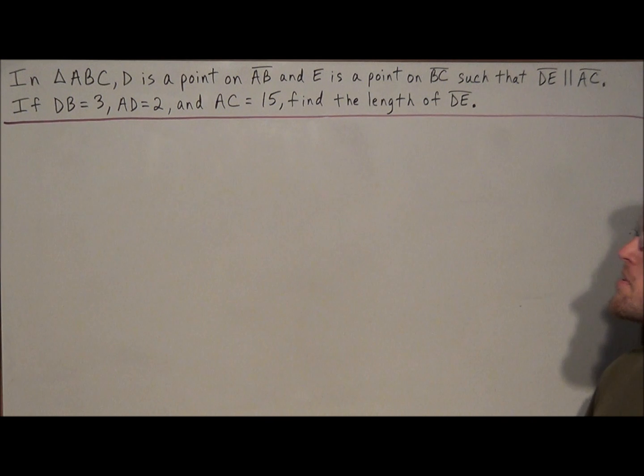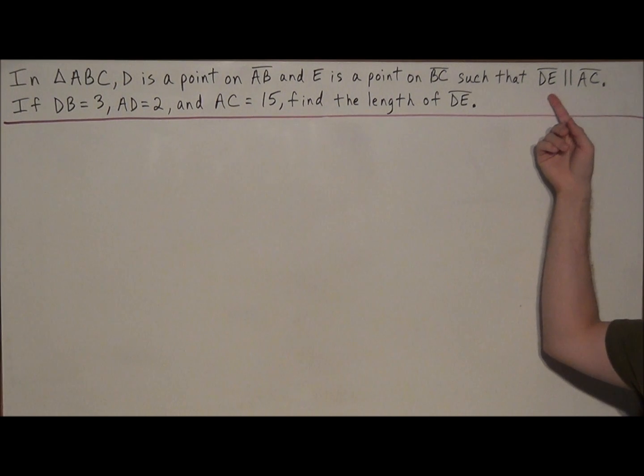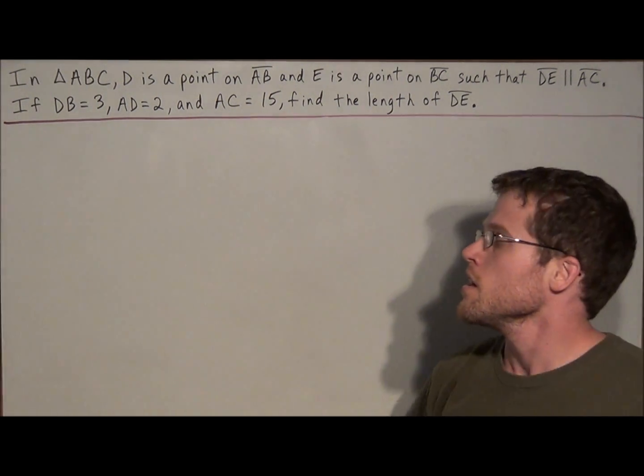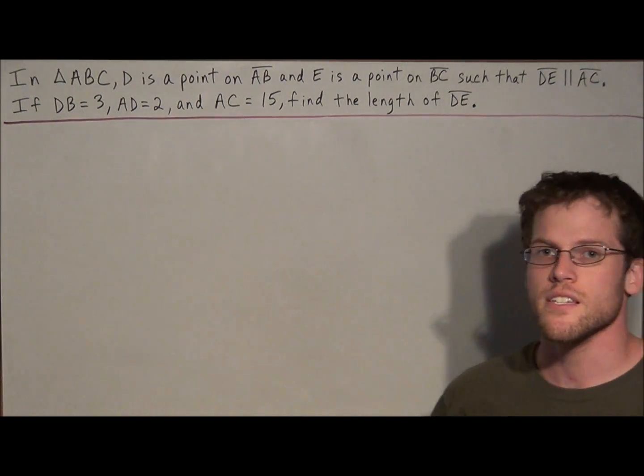So we have in triangle ABC, D is a point on AB and E is a point on BC, such that DE is parallel to AC. If DB equals 3, AD equals 2, and AC equals 15,